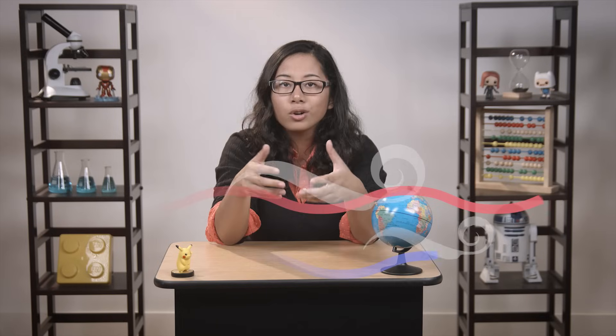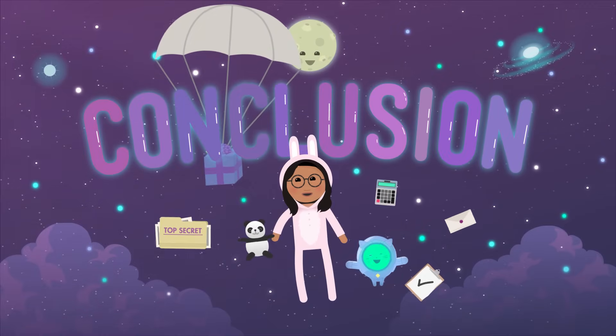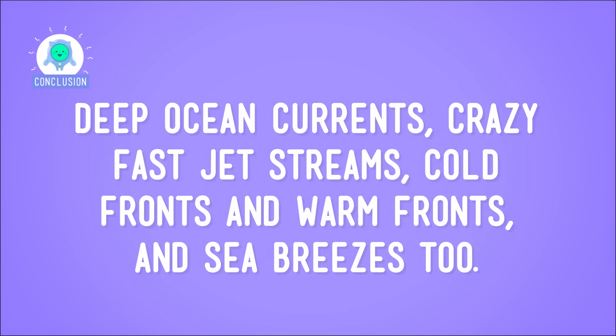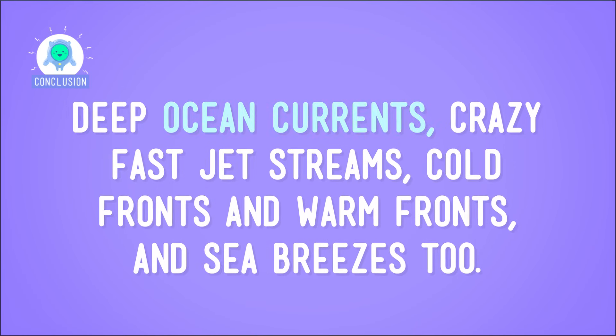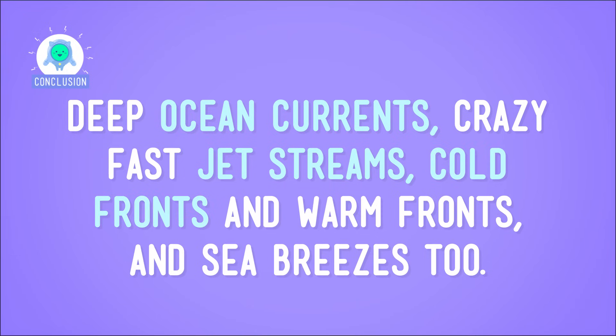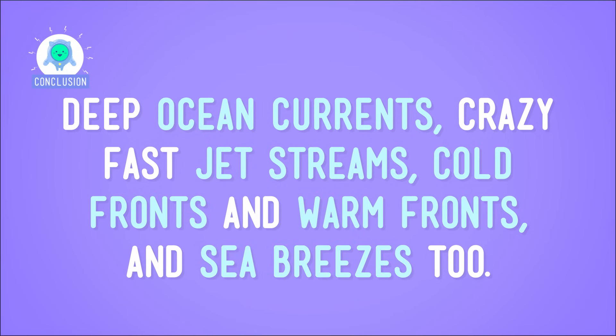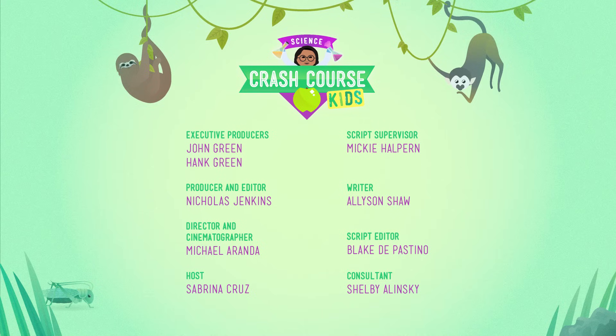As the air interacts with land and water, exchanging heat and moisture, it forms high and low pressure zones, in turn forming weather systems. So, Earth is complex. We've got deep ocean currents, crazy fast jet streams, cold fronts and warm fronts, and sea breezes too. So it's probably a lot to ask of my weather app to get the forecast right every single time. Sorry for yelling at you, phone.